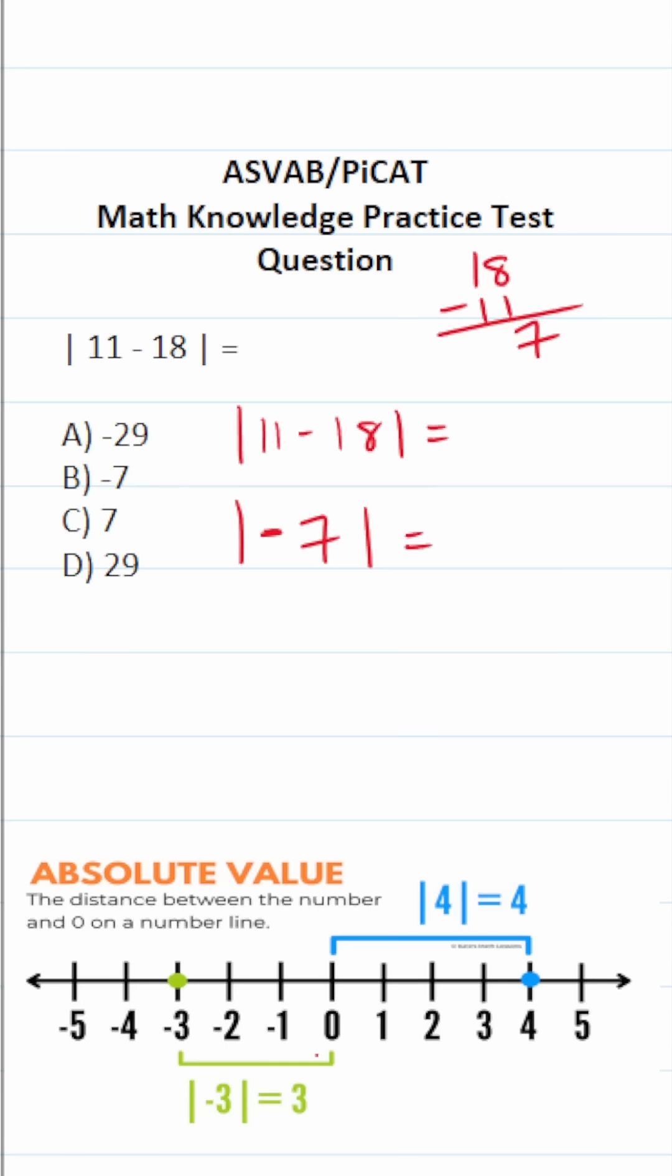Now the absolute value of any negative value is always going to be positive. So the absolute value of negative 7 is going to be positive 7. So this one is C.